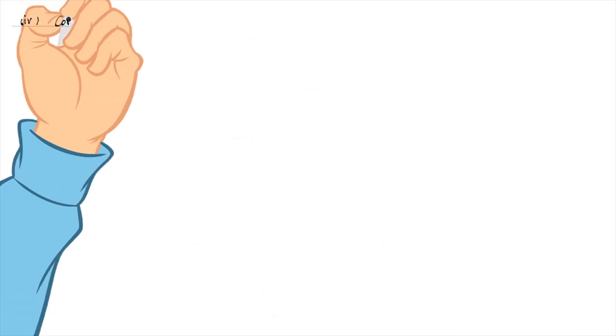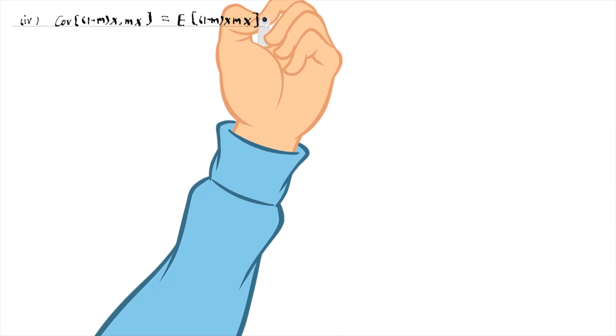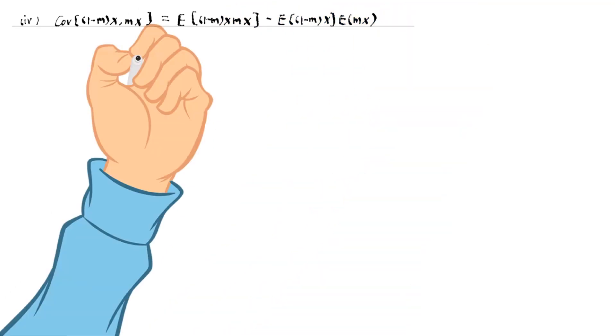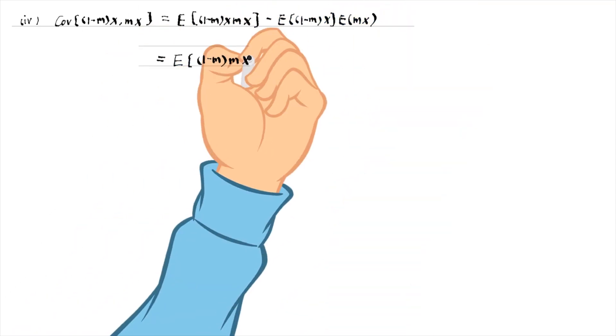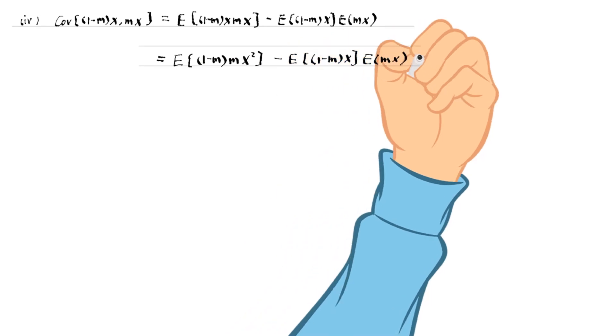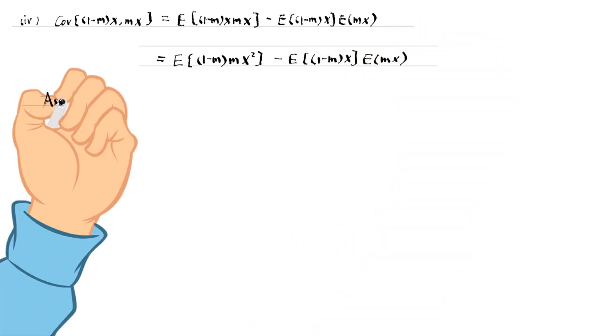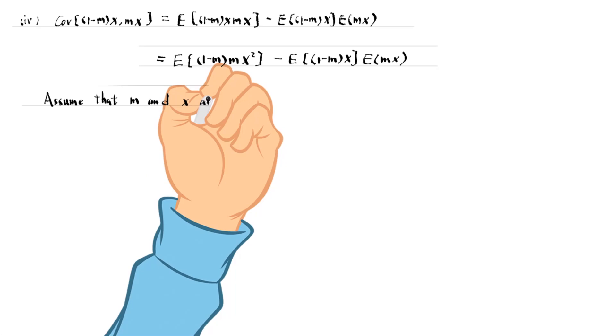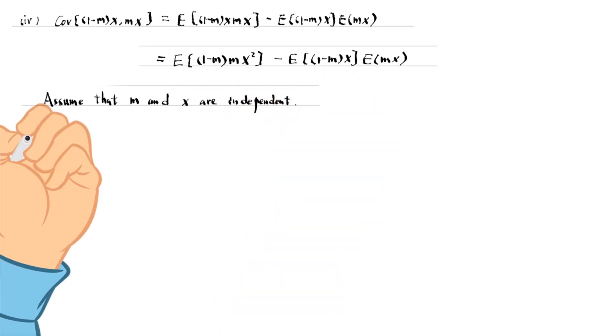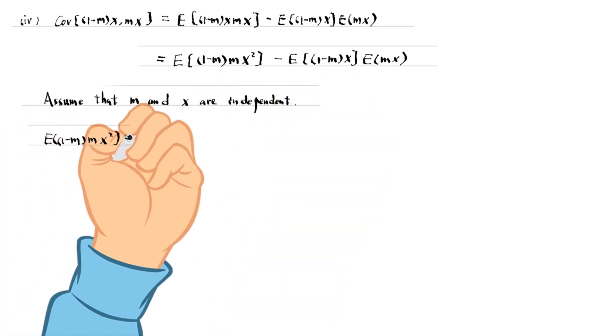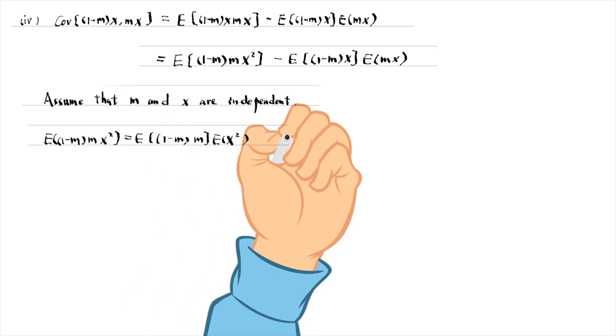In part 4, we first show the expression of the covariance. Then we show that the OLS estimate of beta 1 from the regression of y on z is biased or inconsistent because the covariance between z and the composite error is not 0.